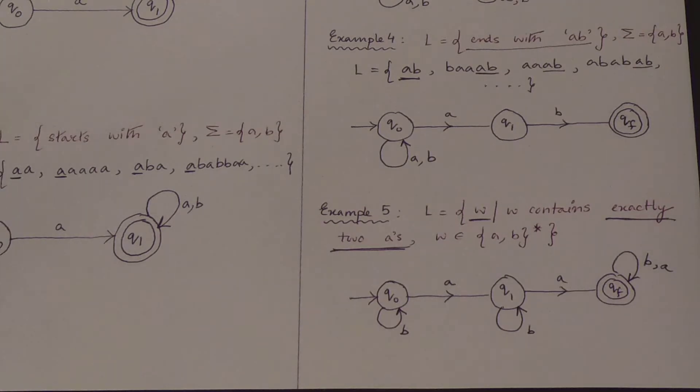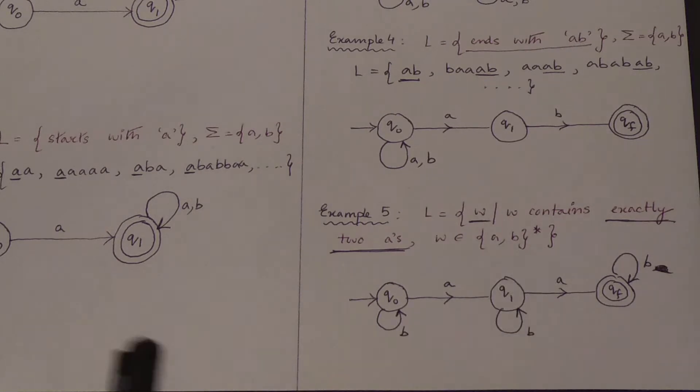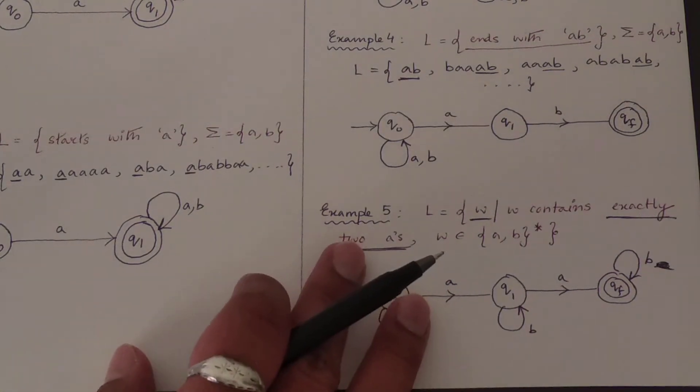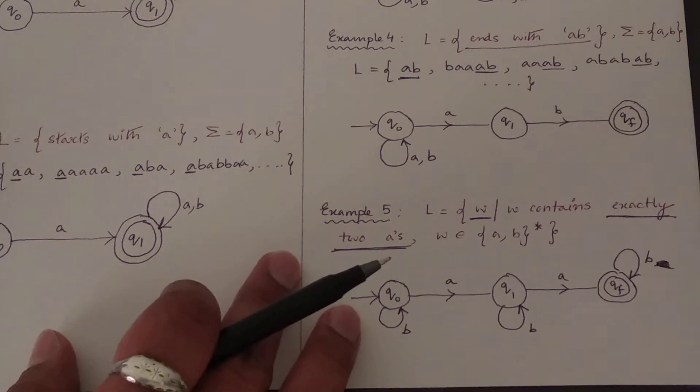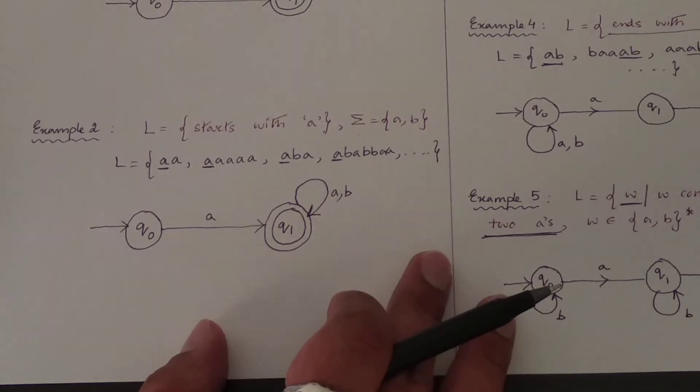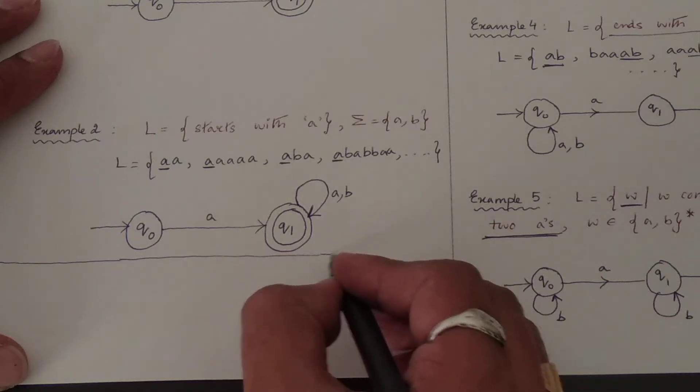So then next will be, suppose if I ask you at most two A's, means maximum to maximum we can have two A's. For that I will let you know after finishing off with this particular concept. For that you have to make initial as final, this also final. So if I rub this, then it will be your exactly two A's. If I include A over here, that will be at least two A's. And for at most two A's, I will just explain to you once. So let me finish it off with at most two A's also, then it will be easy for you.